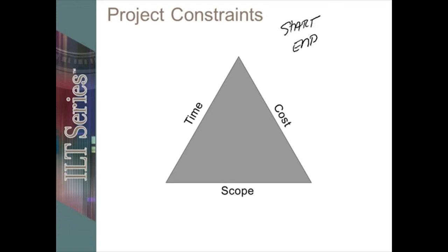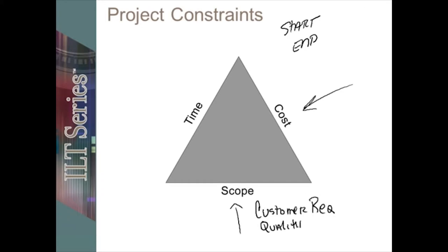These projects are often critical components and a project really has three different types of constraints. We always have cost constraints. Very rarely do we have a completely open budget to do anything we want, which means we have to pay attention to how we get things done. We also have scope, which of course is what the customer requirements are. We want to look at customer requirements, quality specifications, and what deliverables we're expected to come up with.